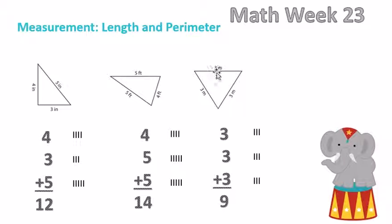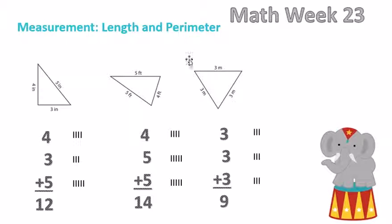Our last triangle has equal sides. Each side equals three meters, three meters, three meters — so we add each of the threes together and we get nine meters. The perimeter of this triangle is nine meters.